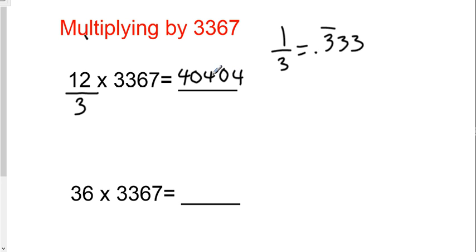So basically, you're going to write the 4 three times with 0s in between. You're always going to write the number three times. Real simple. Once again, just divide the number by 3. When you see 3367, divide the number by 3, write it three times with 0s in between.